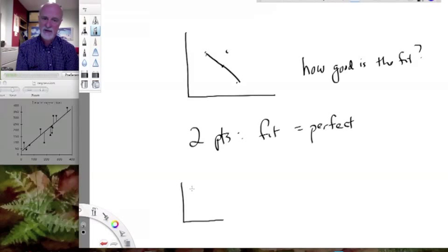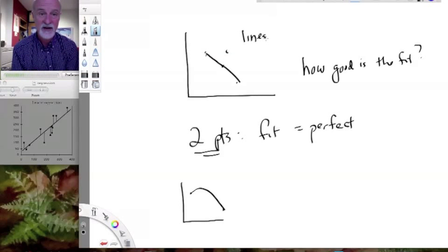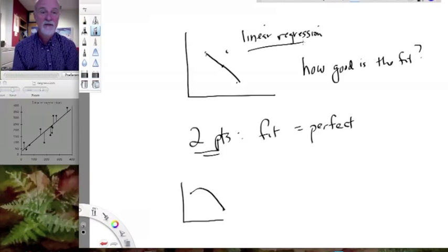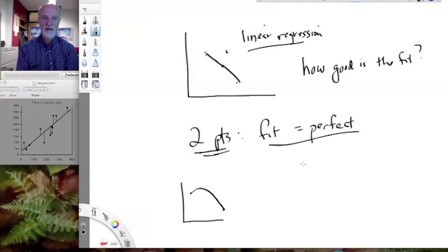You might think, yes, but what if it's a curve? I could fit a curve through three points. Yes, you could. It depends what kind of thing you're fitting. If you're fitting a linear regression, which is what we're talking about, then two points gives you a perfect fit. How do we measure that perfection of the fit? We measure it with r squared, and in this case r squared will be one. R squared is a number that varies between zero and one, and an r squared of one equals a perfect fit.